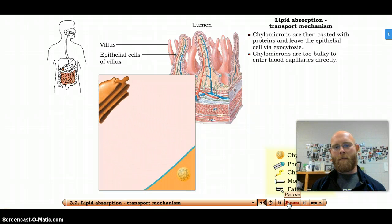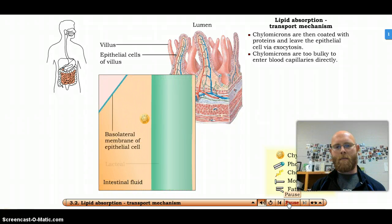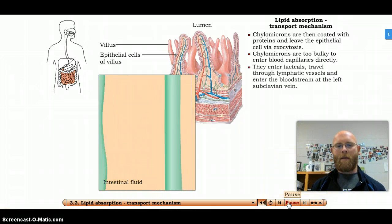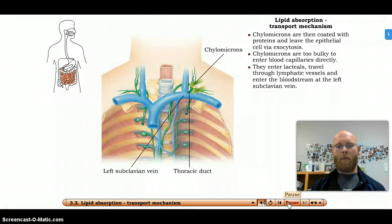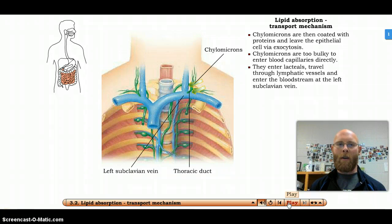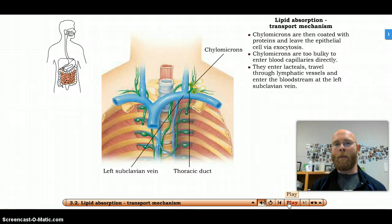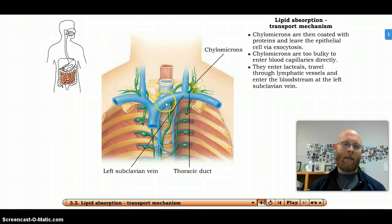Because of their bulk, chylomicrons do not enter blood capillaries directly. Instead, they enter lacteals, travel through lymphatic vessels, and enter the bloodstream at the left subclavian vein. Lacteals are the very small capillary versions of your lymphatic system. The lymphatic system is absolutely important for transporting fats to this left subclavian vein, or the thoracic duct, where they can be dumped into the blood system and then sent to the heart and out to the rest of your body.